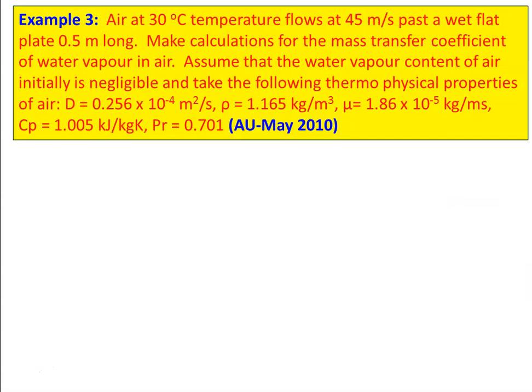We take example number three. Air at 30°C flows at 45 m/s over a wet flat plate 0.5 m long. Calculate the mass transfer coefficient of water vapor in air, assuming water vapor content is initially negligible. Thermophysical properties: D = 0.256 × 10⁻⁴ m²/s, ρ = 1.165 kg/m³, μ = 1.86 × 10⁻⁵ kg/(m·s), specific heat = 1.005 kJ/(kg·K), Pr = 0.701. This is from May 2010 question paper.